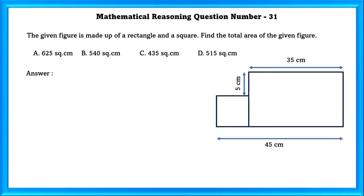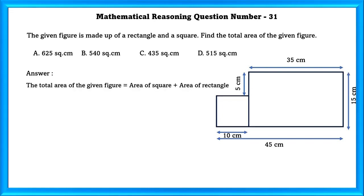Question No. 31: The given figure is made up of a rectangle and a square. Find the total area. The side of the square is 45 − 35 = 10 cm. The rectangle side is 10 + 5 = 15 cm. Total area equals area of square plus area of rectangle: (10 × 10) + (35 × 15) = 100 + 525 = 625 square centimeters.